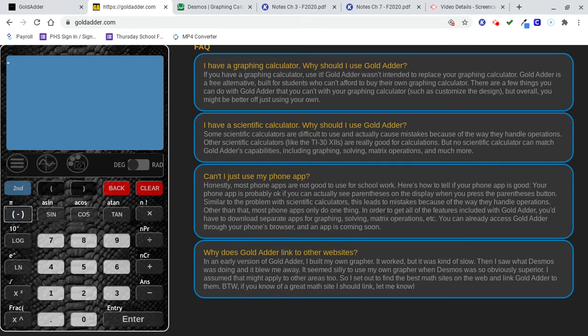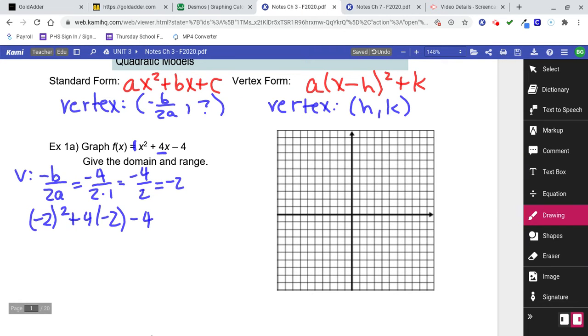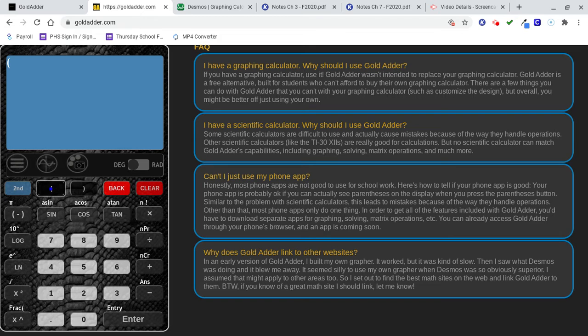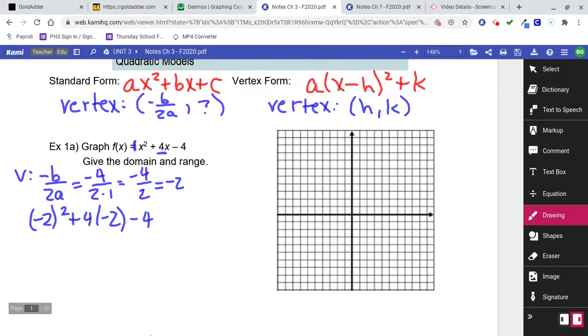Let's see. Wait, what was it? Hang on. Negative 2. Forgot my parentheses. Negative 2 squared plus 4 times negative 2 minus 4. Gives me negative 8. All right, so when you plug that in, you get negative 8.